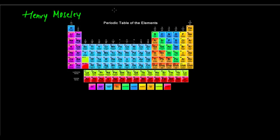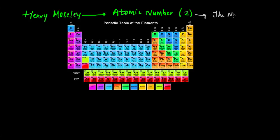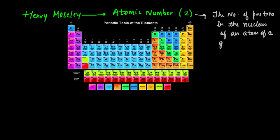Henry Moseley came up with the idea of the atomic number. He said that the atomic number was a very good method of classification of elements, and based on atomic number, elements could be classified very conveniently. Atomic number was basically the number of protons in the nucleus of an atom of a given element. Based on the concept of atomic number, Moseley came up with the idea of classification of elements and formulated a law which he called the modern periodic law.